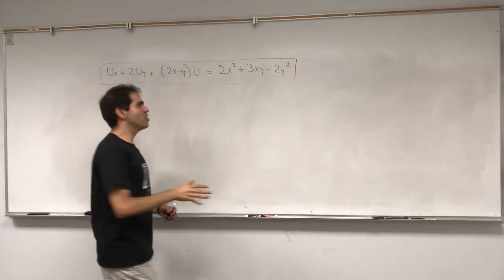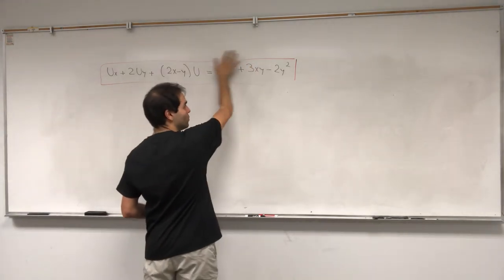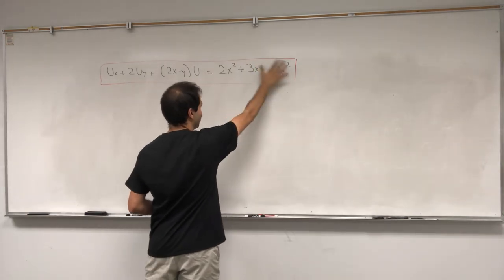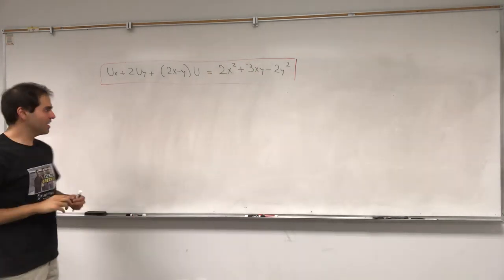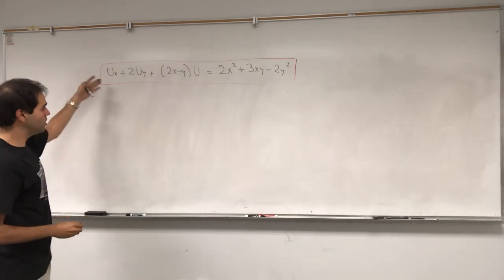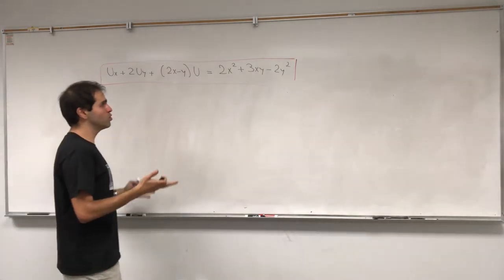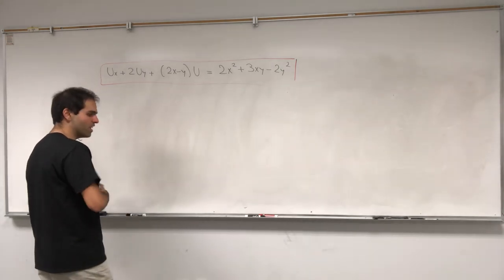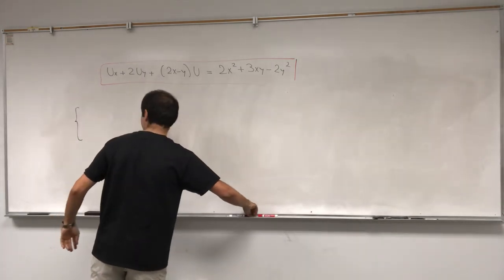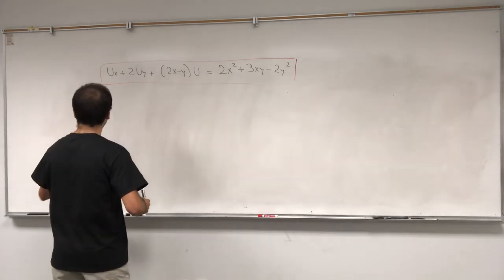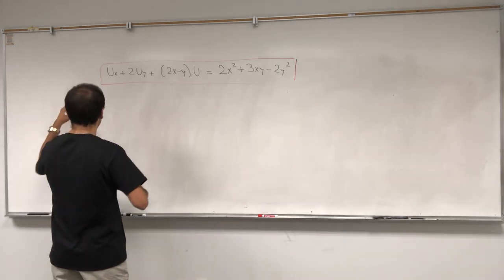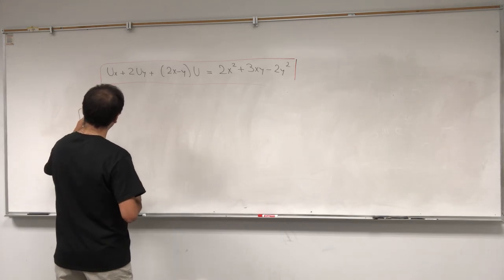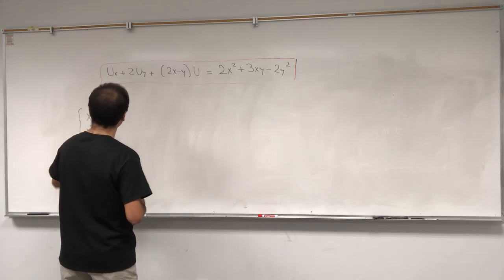By the way, if you're in my class, you're just responsible for the case where this is zero, so this is slightly beyond the course. But what we would like to do is define new coordinates. I did it with xi and eta, and it became such a mess, so it might be easier to use x prime and y prime. Let x prime be something and y prime be something else.